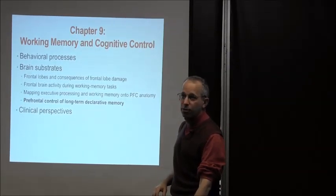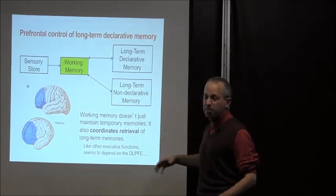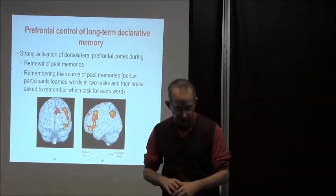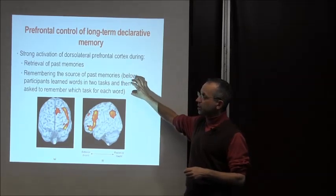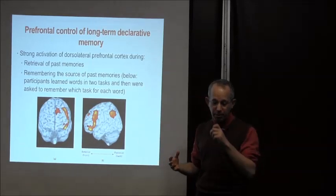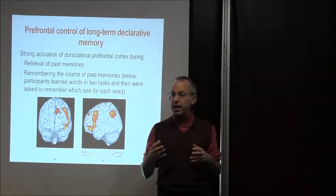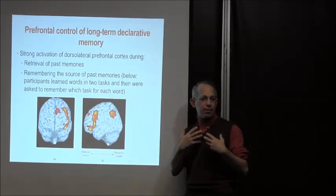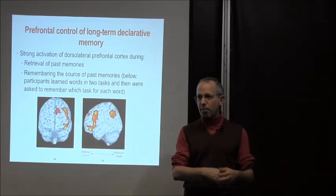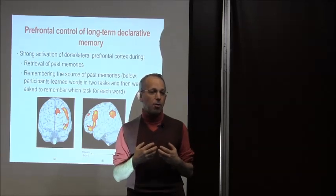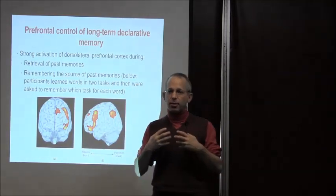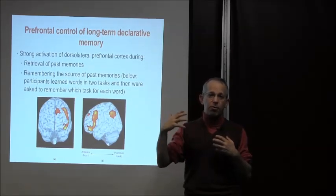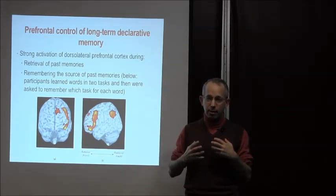Working memory doesn't just maintain temporary information — it also coordinates the retrieval of long-term memory. Like other executive functions, this depends on the dorsolateral prefrontal cortex, which shows strong activation during retrieval of past memories. For example, in source memory tasks, participants learn words across two different tasks and are later asked to remember which task each word came from. This requires holding task information in working memory to conduct a directed search through long-term memory back into short-term memory — using working memory as an index for retrieval.